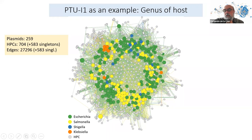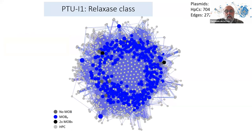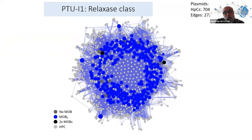When you look at the distribution of hosts, you see that Salmonella, E. coli, Klebsiella, and Shigella are distributed more or less randomly. That is why we think these I1 plasmids are able to colonize the entire Enterobacteriaceae family. Here you have the same network colored by the presence of the relaxase — this is a P-class relaxase, shown in blue.